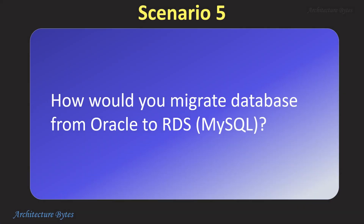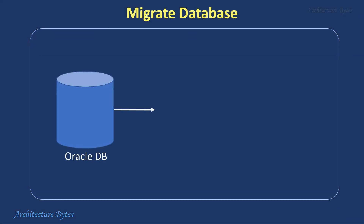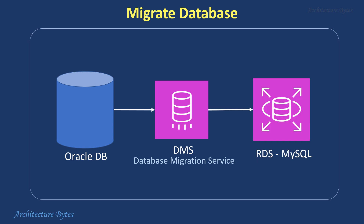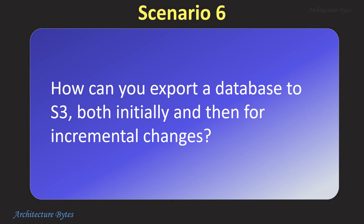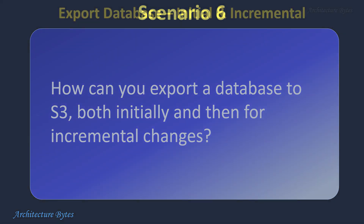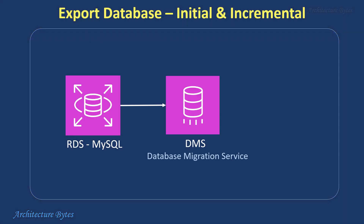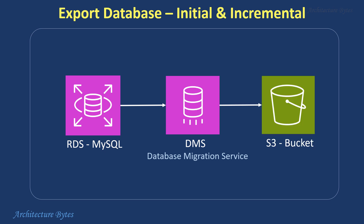How would you migrate a database from Oracle to RDS? AWS DMS, or Database Migration Service, facilitates migrating data from one database to another, be it within AWS or between your on-premise environment and AWS. For exporting a database to S3 both initially and incrementally, AWS DMS handles both initial and ongoing exports. It can do a full data export from the database to S3 and then continuously replicate changes, keeping it synchronized.